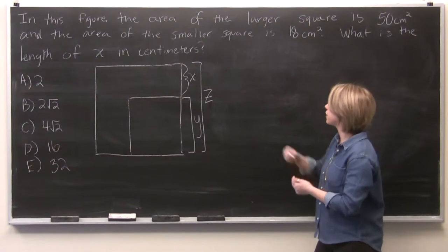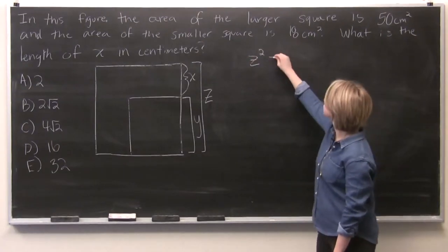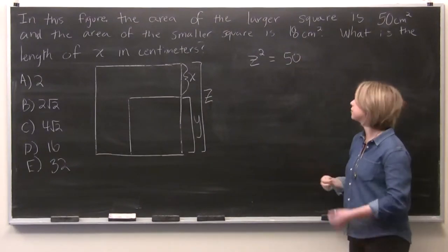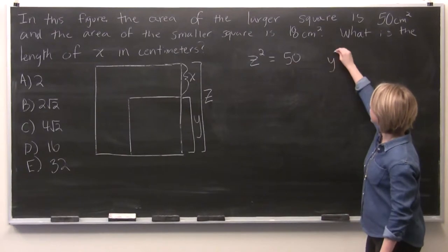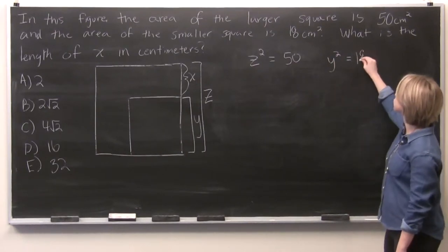And so we know that z squared is equal to 50 centimeters squared. And we know that y squared is equal to 18 centimeters squared.